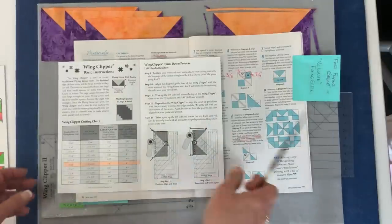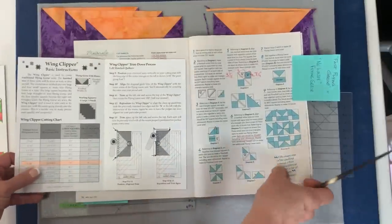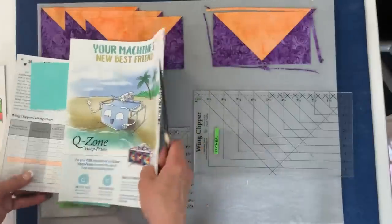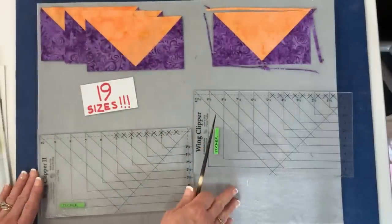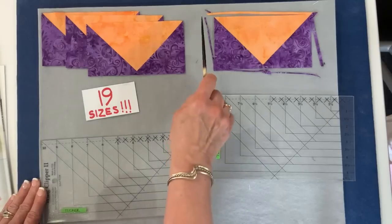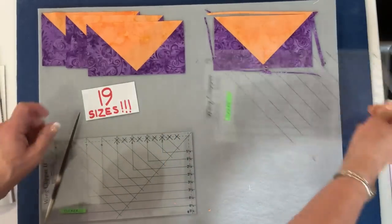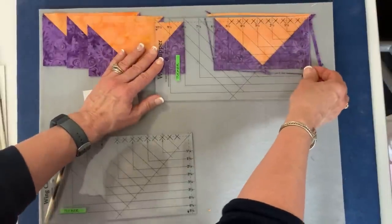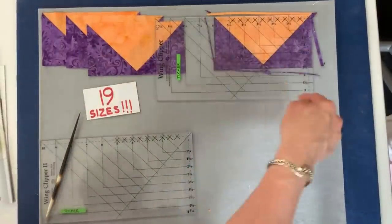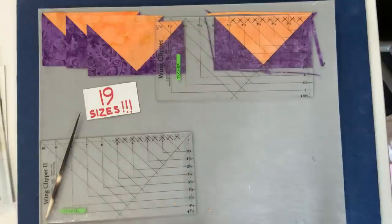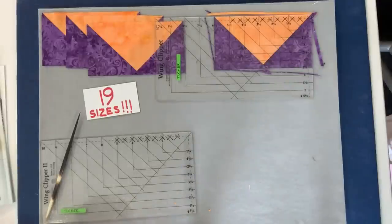That little bit of extra wiggle room in the squares is what gives you the opportunity to build these units four at a time, to build them slightly oversized, and then come back with a tool that has guidelines on it, making it very easy to center over your unit. The guidelines are here and here. You trim it up with very little waste. You end up with the perfect units that you're desiring to go on and build the remainder of your project.